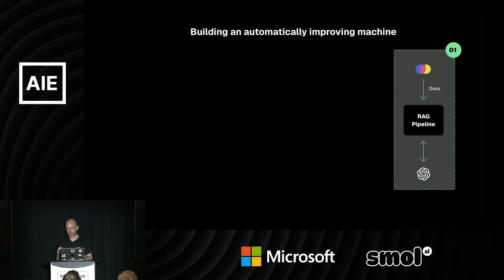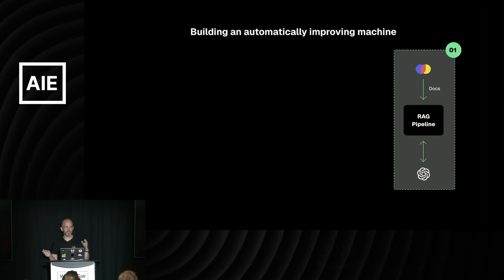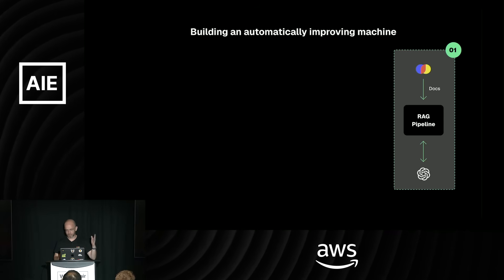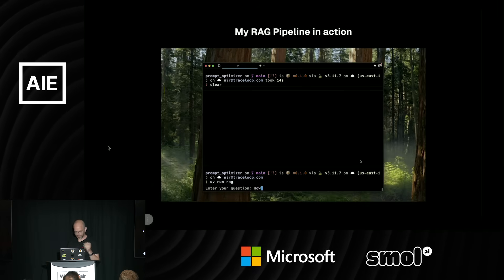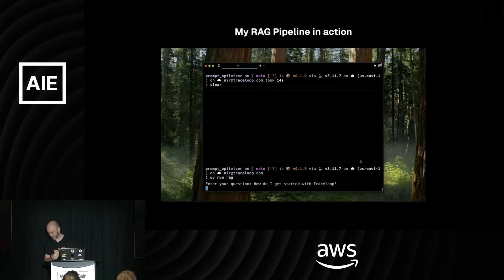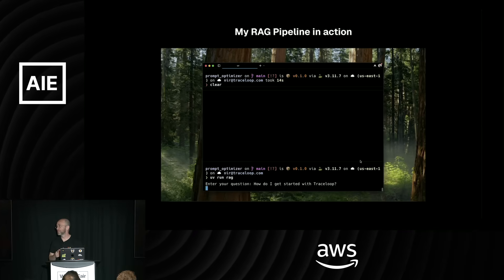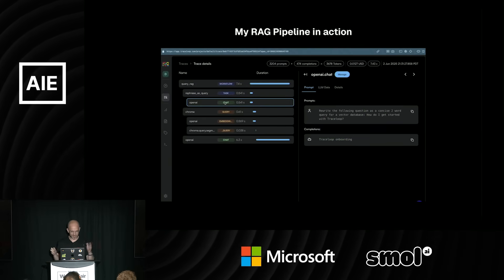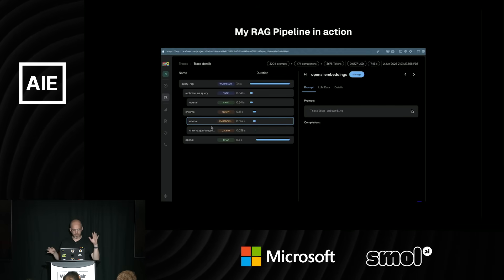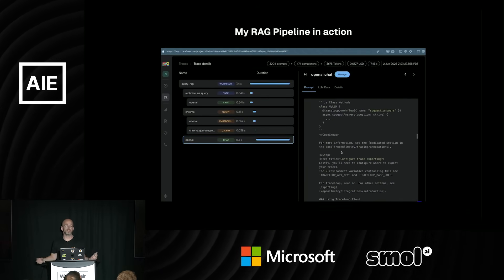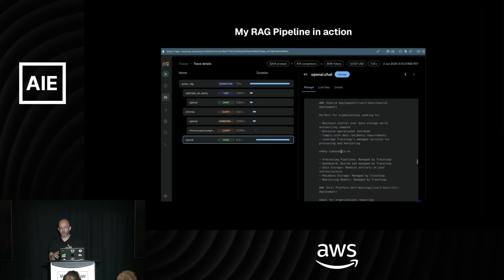The RAG pipeline is super simple — a Chroma database, OpenAI, and some simple prompts that take the question, find relevant documents in the Chroma database, and output an answer. I ask it a question like 'How do I get started with Traceloop?', it runs, takes a couple of seconds, and I see an answer. You can see the trace — a couple of calls to OpenAI, the Chroma database, and at the final stage all the context goes into OpenAI and we get the final answer. We have a couple of prompts we'd probably want to optimize.